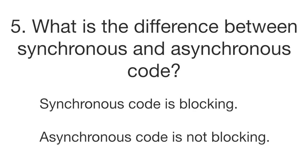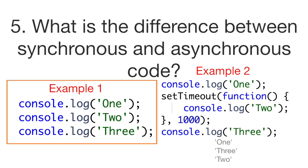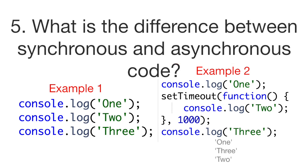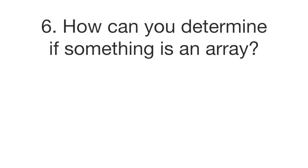In the first example the three lines of code run in order — the next line can't run unless the one before it completes. In the second example, three is logged before two even though two appears earlier in the code. This is because setTimeout is an asynchronous operation — it waits for the specified time before running the function inside it. That inner function is called a callback because it is called later when things are ready.